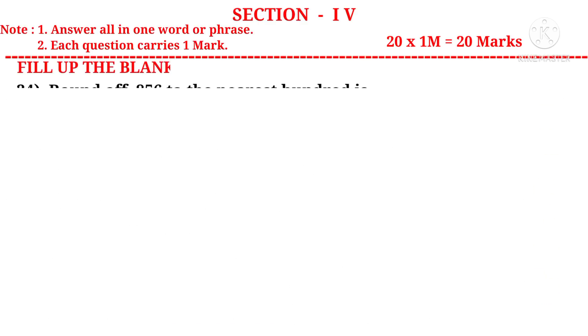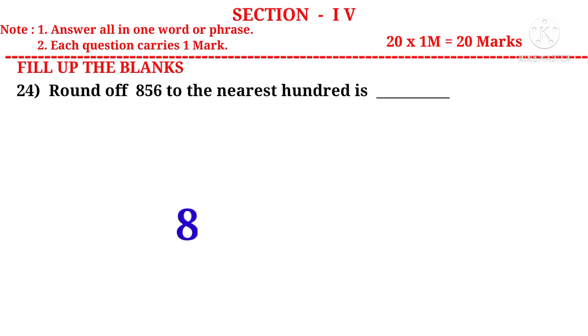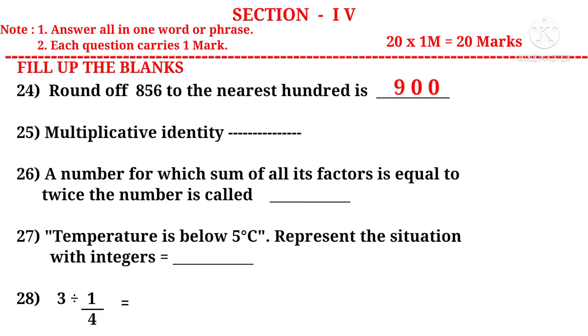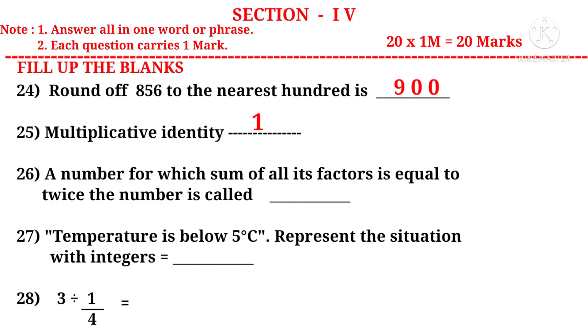Now let us take fill up the blanks. 24: Round off 856 to the nearest 100 is. Write 856. Write its place value: units, tens and hundreds. So hundreds, identify 100. And on the right side of it, that is in tens place, if there is 5 or more than 5, we have to add 1 to the hundreds place. And the remaining place values are 00. So the number is 900. Now 25: Multiplicative identity. When 6 multiplied by 1 does not change its value. That is 6 only. So it is possible when it is multiplied by 1. So multiplicative identity is 1. 26: A number for which sum of all its factors is equal to twice the number is called perfect number.